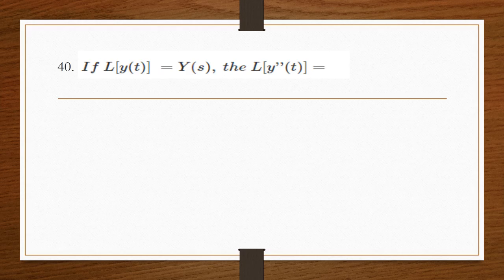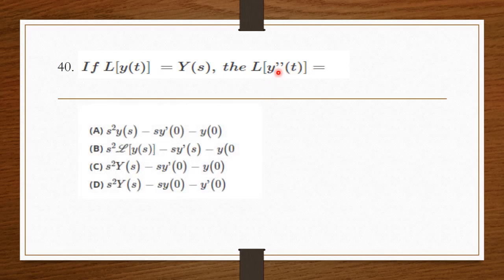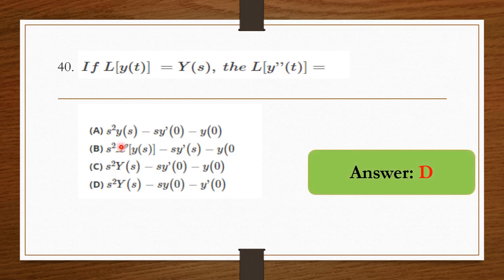If the Laplace transform of y(t) is Y(s), then the Laplace transform of y″(t) — double time differentiation. Using the property, we can write s²Y(s) − s·y(0) − y′(0). So option D is the right answer.